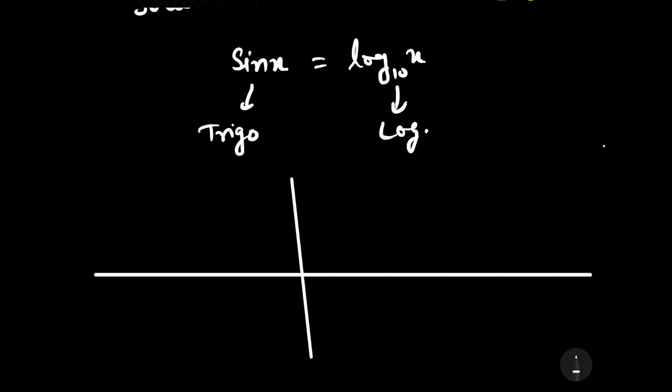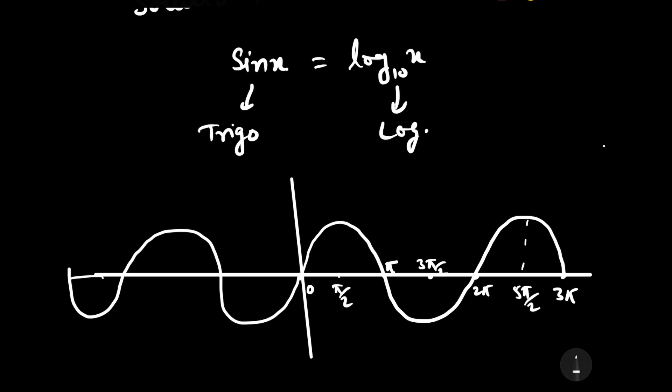The graph of sin x looks something like this, and on the negative side it looks something like this. This point is 0, this point is π/2, this one is π, this is 3π/2, this is 2π, and this is 5π/2, and this is 3π. This point is -2π.